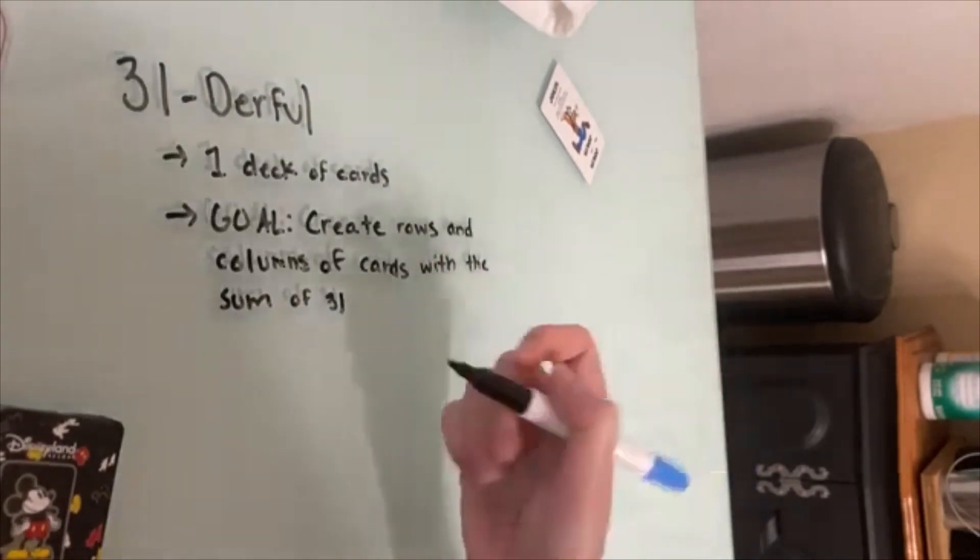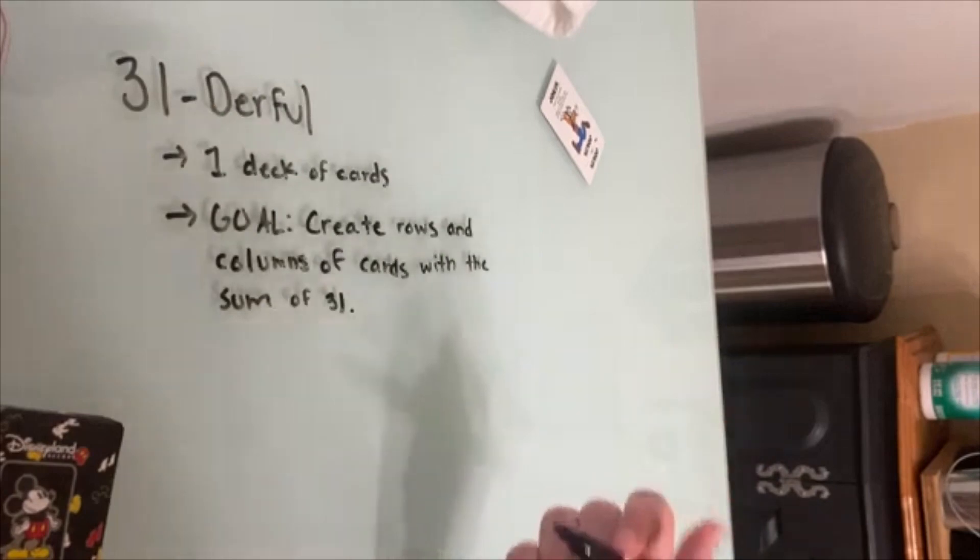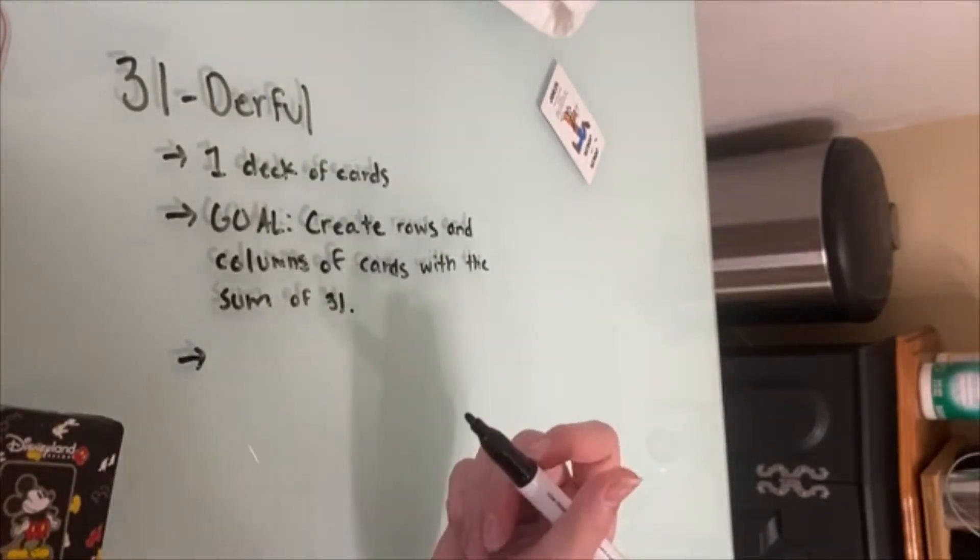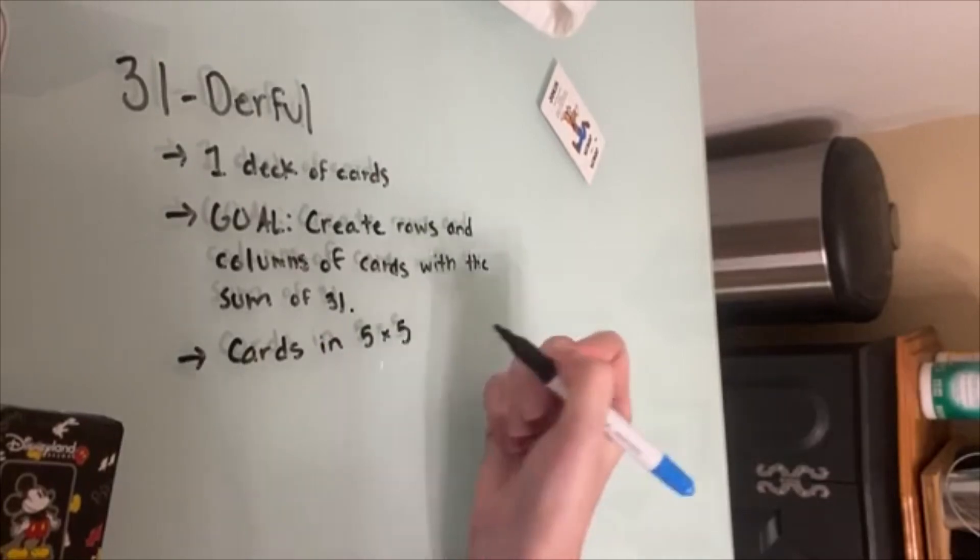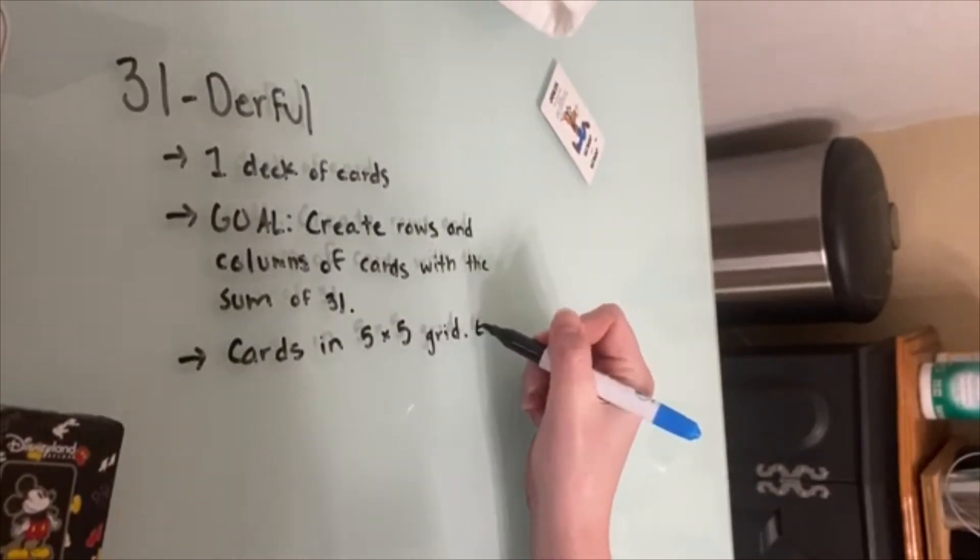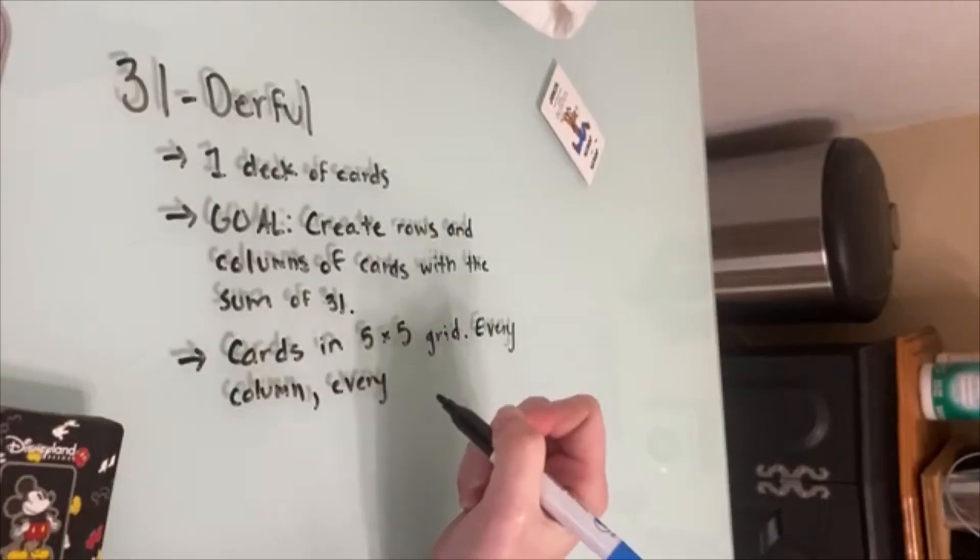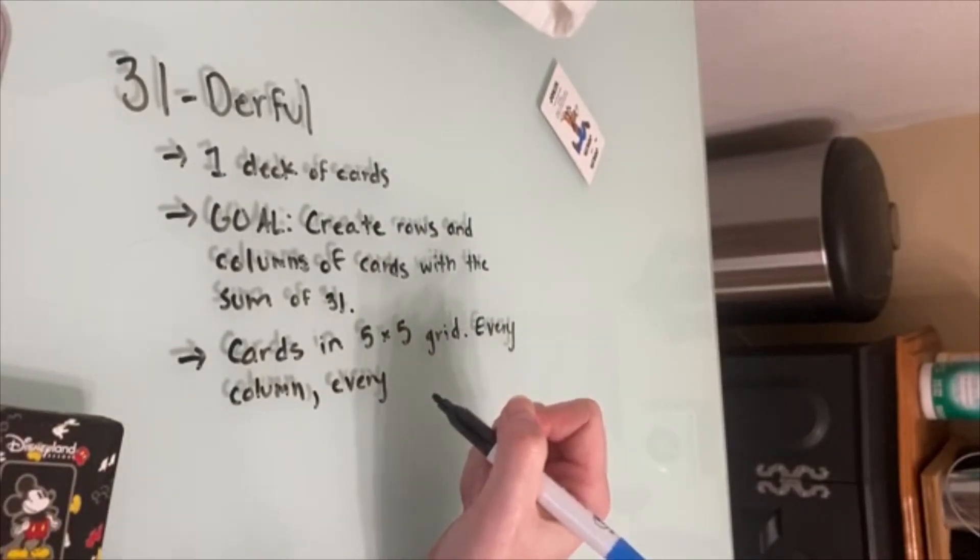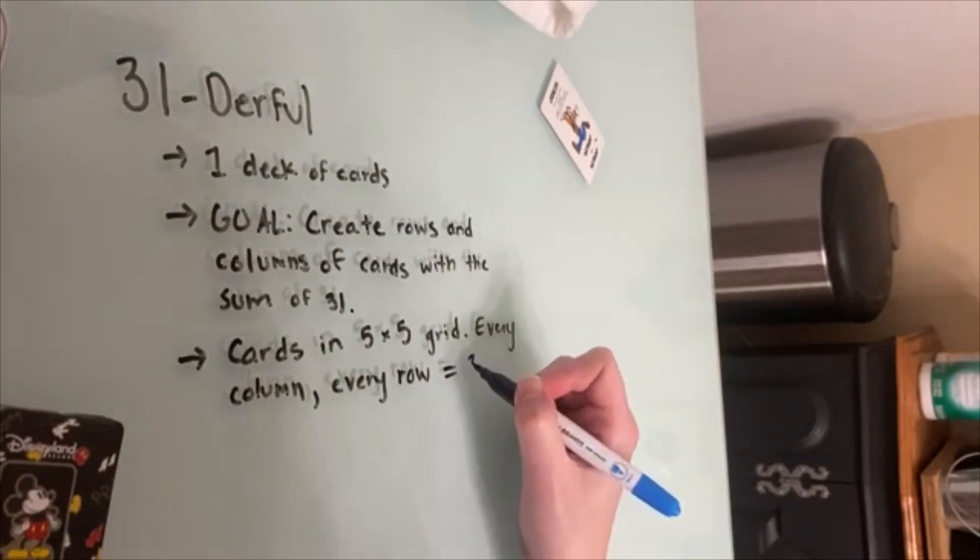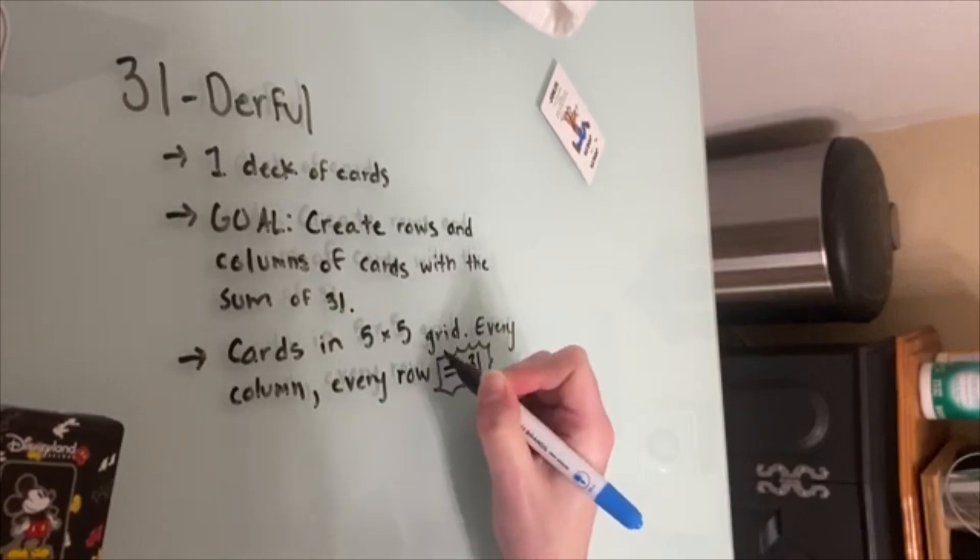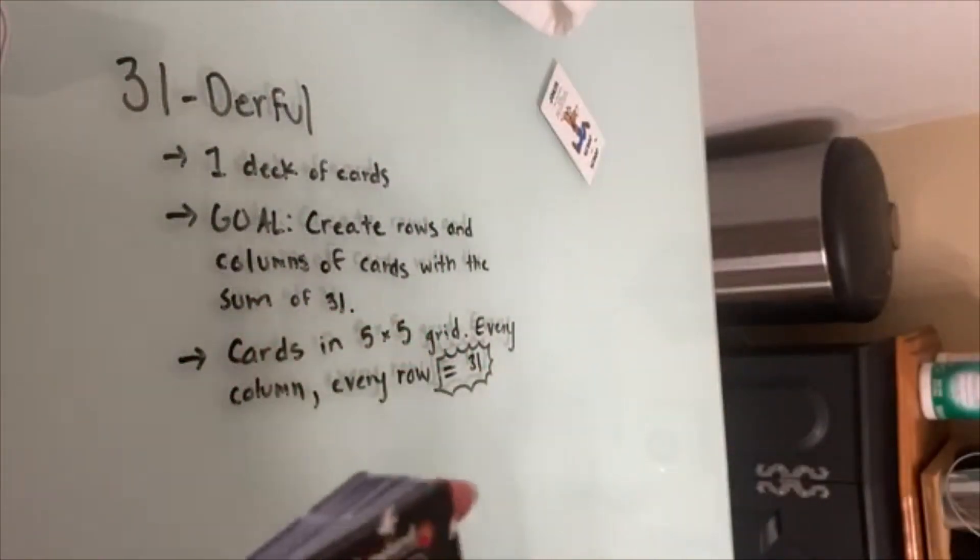To win, each row and each column needs to equal 31. So you're going to have your cards in a 5 by 5 grid. You're going to take a card, you're going to take your deck of cards.